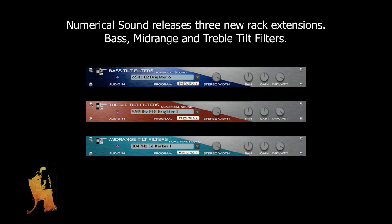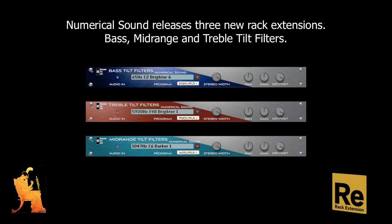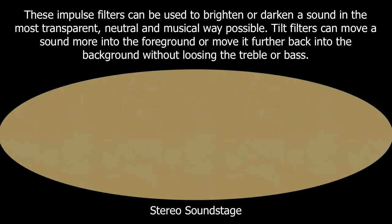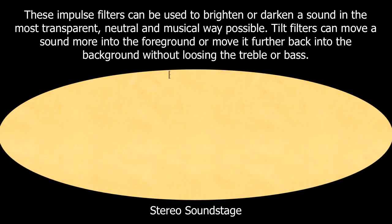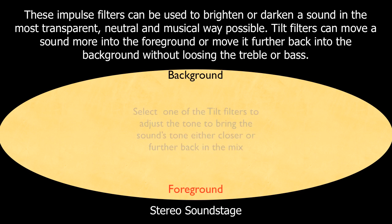Numerical Sound releases three new rack extensions: bass, mid-range, and treble tilt filters. These impulse filters can be used to brighten or darken a sound in the most transparent, neutral, and musical way possible.